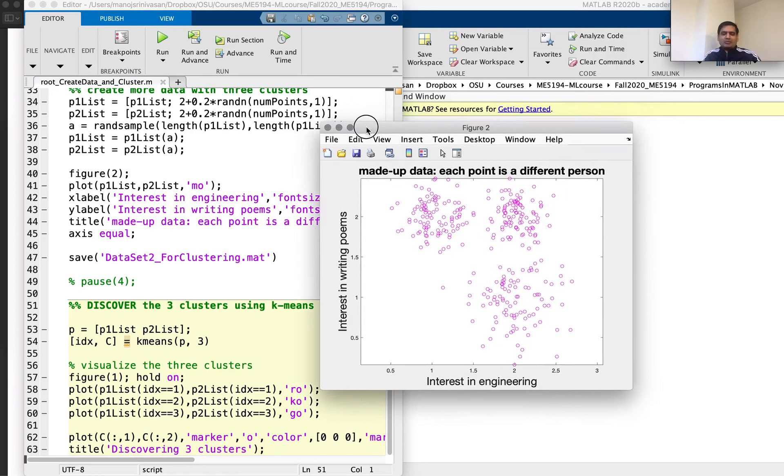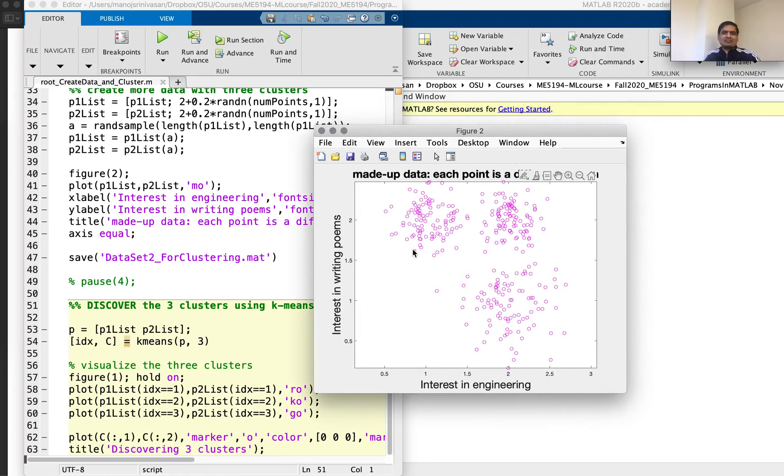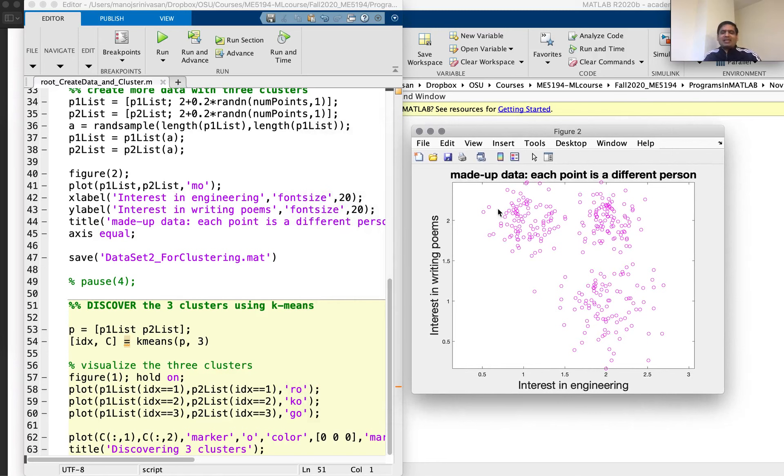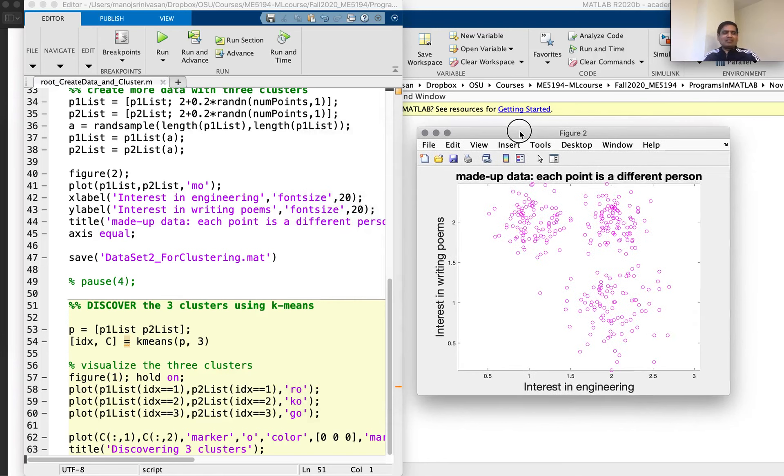So one reason for clusters to arise is if there is a positive feedback system. Once you express interest in engineering, people encourage you and you become more interested in engineering, perhaps to the exclusion of being interested in poems. So it's conceivable that data has clusters. And if there are clusters like this, it would be interesting to determine or discover the existence of these clusters.